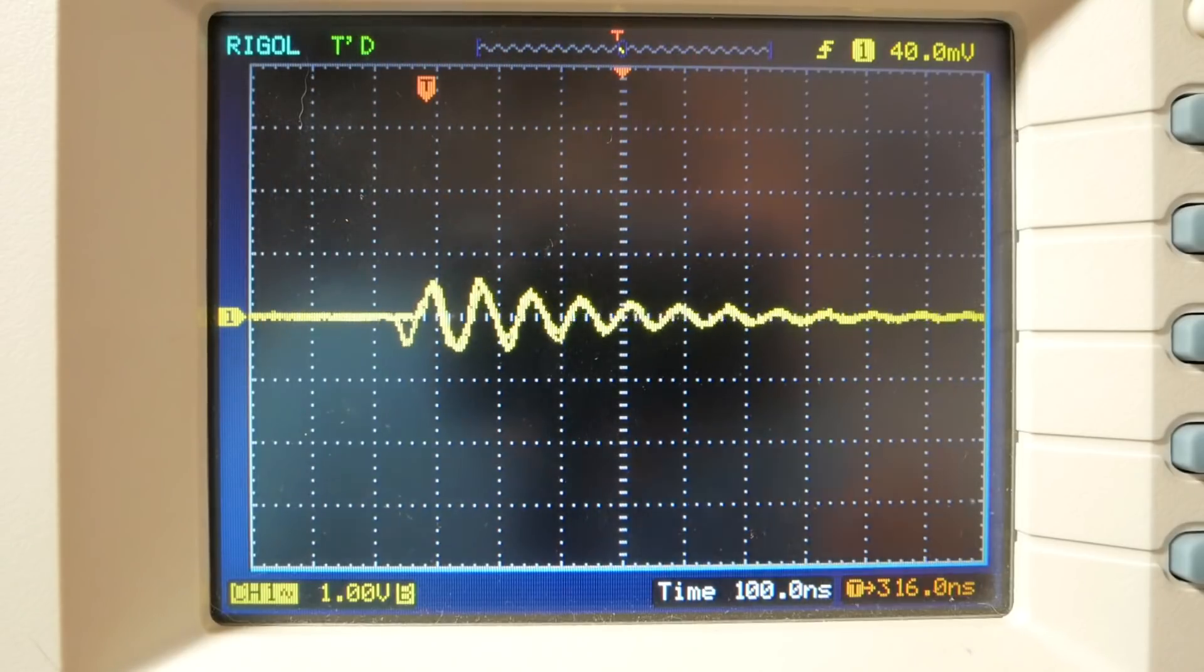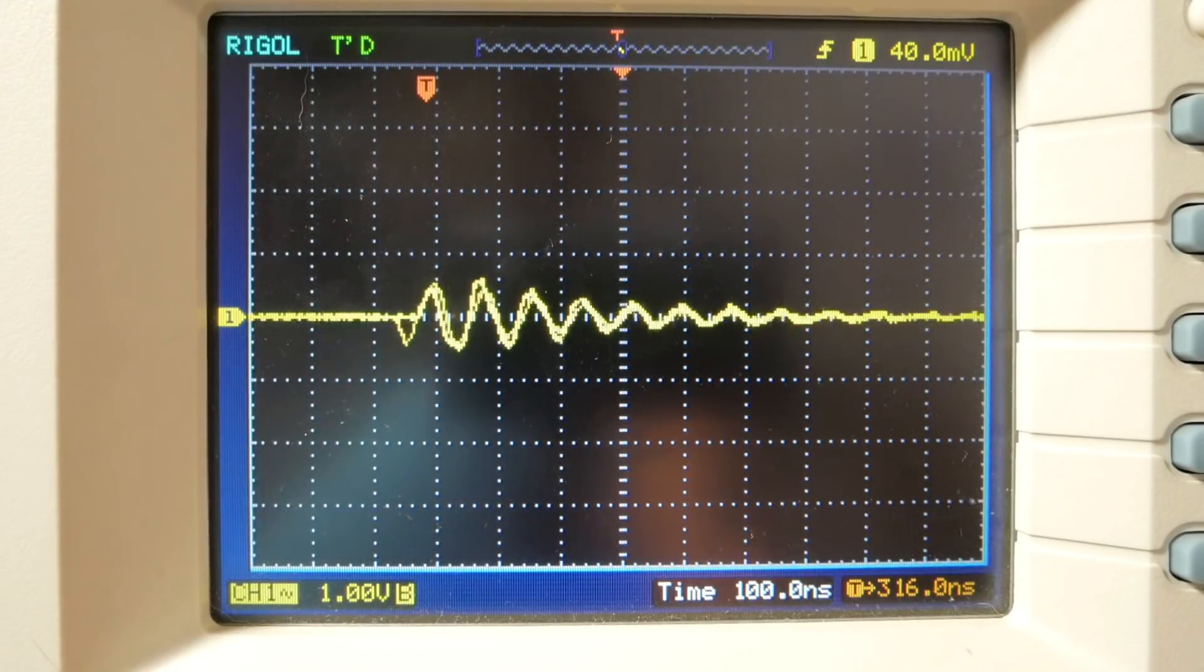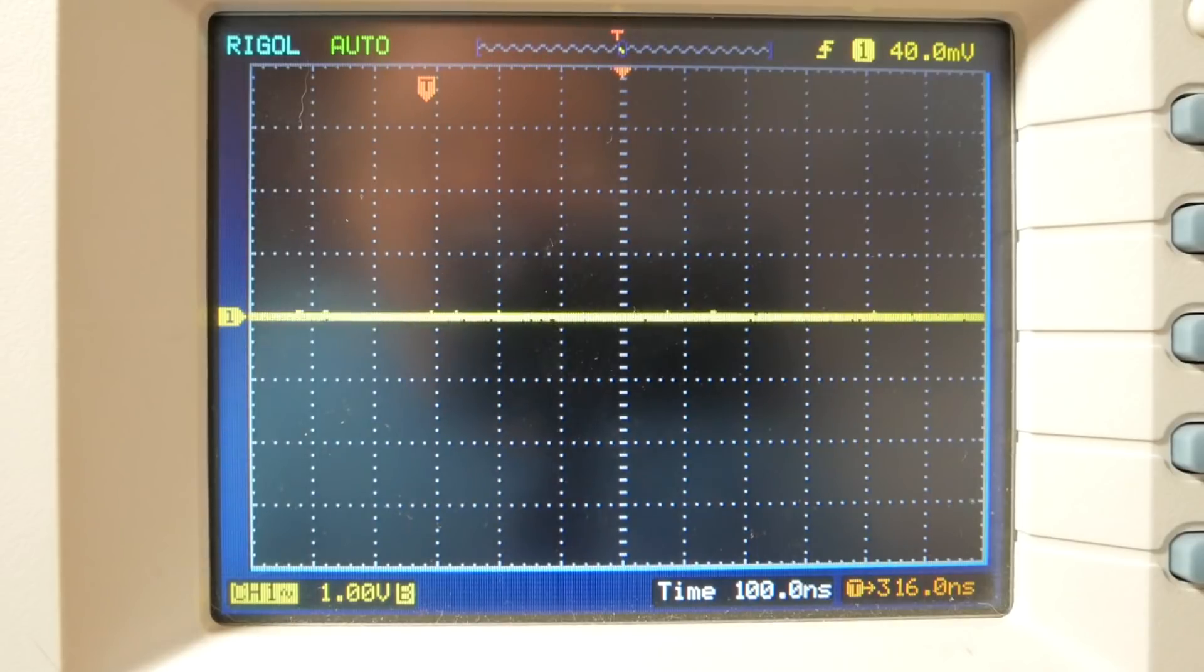So the CCS is putting that on the supply, telling me that there's no decoupling. We need to take care of that. Let's see what happens when I put the capacitor across the supply again. You can see it cleans it right up. If I take it off, it comes back. Put it back on.